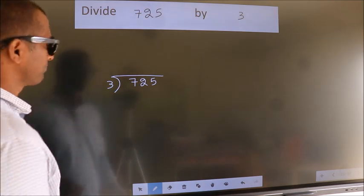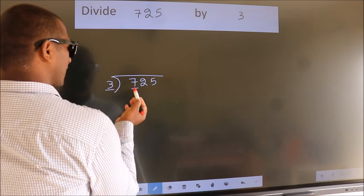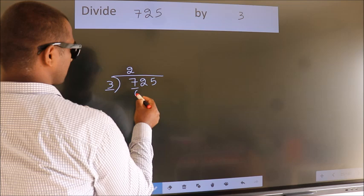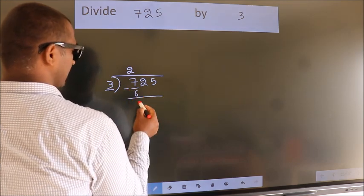Next. Here we have 7, here 3. A number close to 7 in 3 table is 3 times 2, 6. Now we should subtract. We get 1.